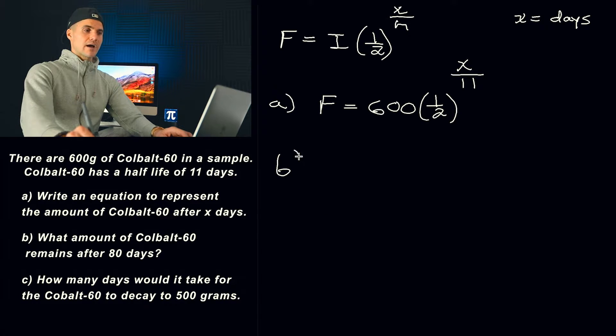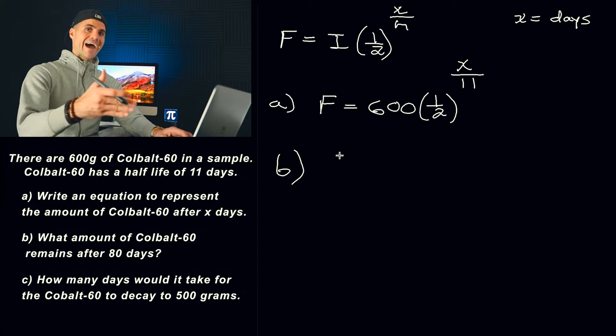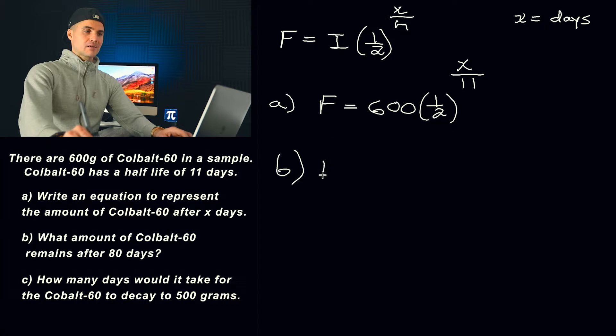In part B, what they're asking us for is what is going to be the amount of cobalt that's going to remain after 80 days. So what we're going to be doing is plugging in simply 80 for x. So we're going to do F of 80. Final amount, or the amount remaining, is going to be 600 times one-half to the 80 over 11.